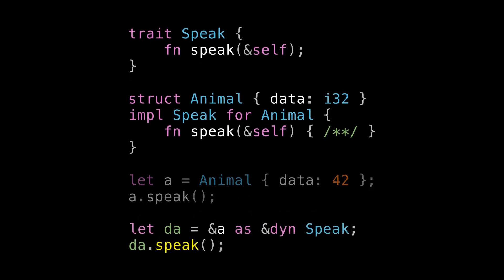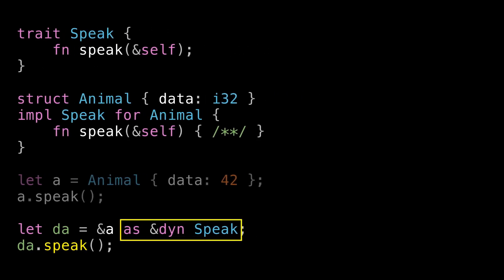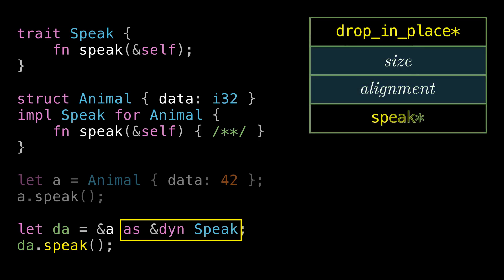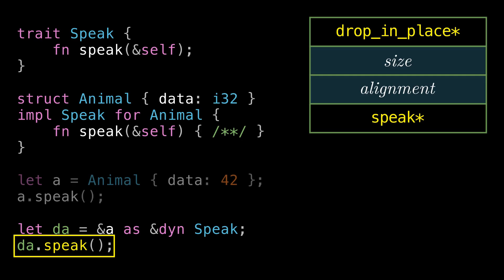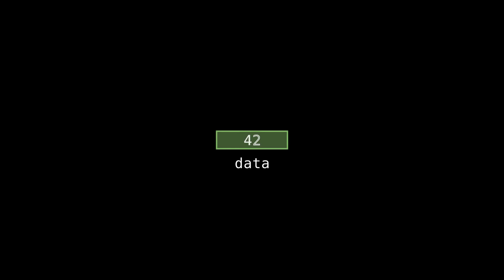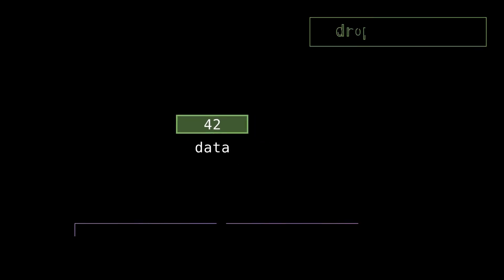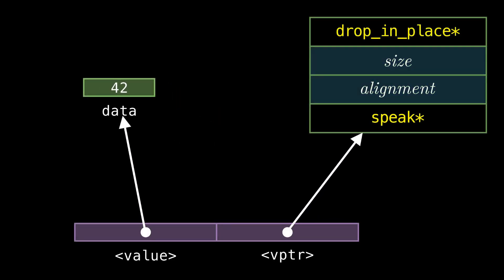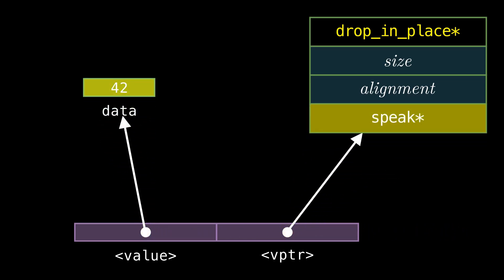Let's quickly see what happens when we use trait object wide pointers as a language feature. It sticks a pointer to the vtable in the wide pointer, and then the call to speak is resolved dynamically through the vtable. Visualizing this in memory: here's our animal, a 32-bit integer. When we perform our unsizing cast, we create a wide pointer pointing to our animal and our vtable respectively. When we call speak using this wide pointer, we dereference the value and the virtual function separately. There's no data dependency between the value and the vpointer — we could get the address of speak without necessarily dereferencing the value pointer. In the world of CPU pipelining and speculative execution, this structure might give your CPU the opportunity to do some really cool stuff to speed up this call.